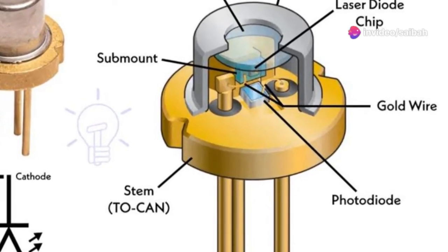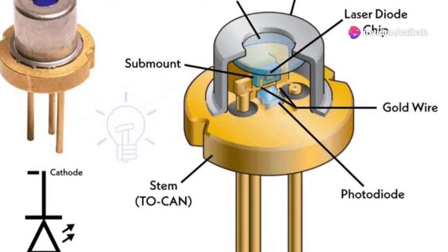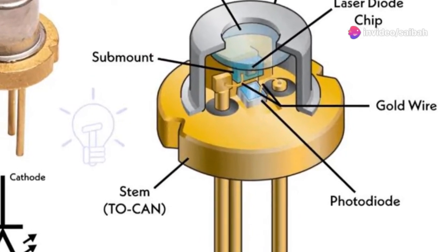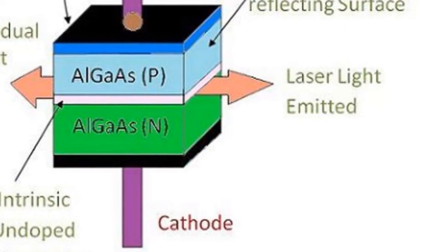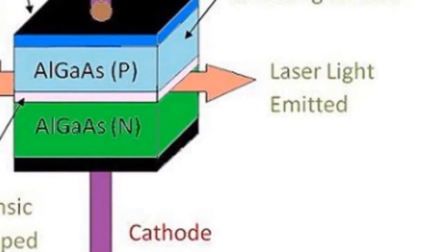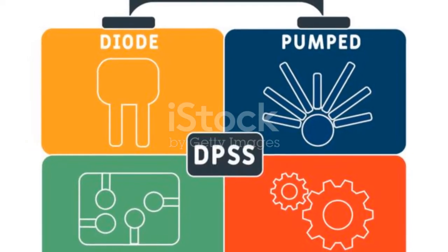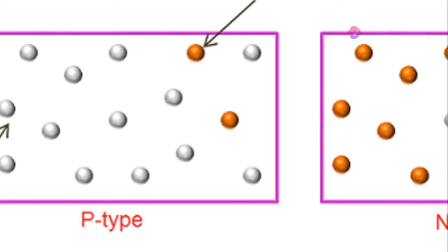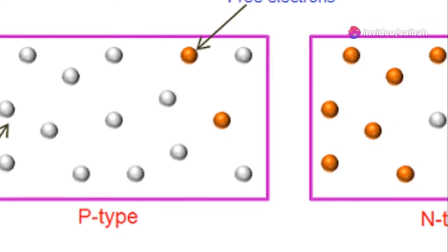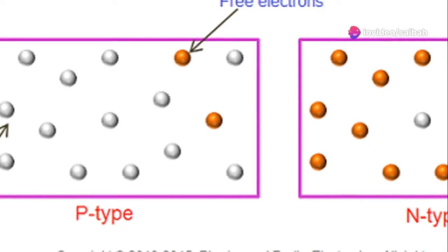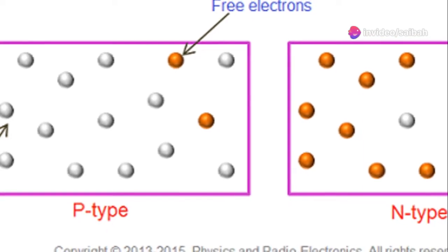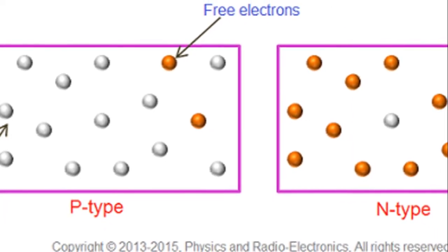Let's talk construction. A laser diode is made of metal contacts, a P-type material, an intrinsic region, and an N-type material. This setup is known as a homojunction laser diode. The intrinsic region between the P and N-type materials boosts the active area, leading to more electron-hole recombination and higher output power.